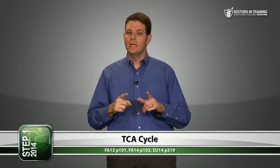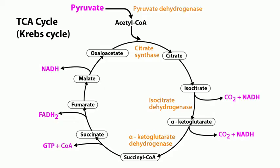Assuming your pyruvate dehydrogenase complex works, you convert pyruvate to acetyl-CoA, which then goes into the Krebs cycle, the TCA cycle, or the citric acid cycle — several names for the same process. For step one, you do not need to memorize every step of the TCA cycle. But you do need to know these three key enzymes: citrate synthase, isocitrate dehydrogenase — which is the rate-limiting enzyme — and alpha-ketoglutarate dehydrogenase, which is highly regulated.